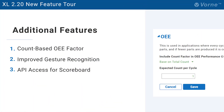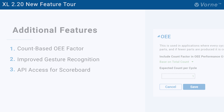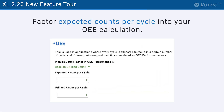We have three more 220 features to showcase for you. First, we've added an optional new factor into the OEE performance calculation, which is based on the expected number of counts per cycle. For example, an injection molding tool might be expected to produce 12 parts with each cycle. However, due to a damaged tool, nine cavities are utilized and three are not. In this example, the OEE performance count factor would be calculated as 75%.